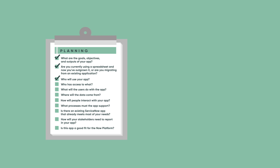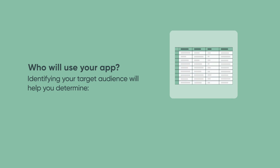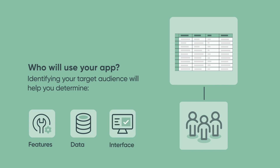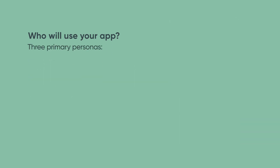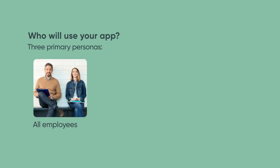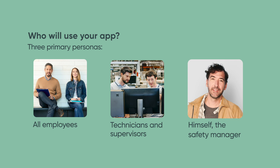Next question: who will use your app? Identifying your target audience will help you determine which features your app will provide, the data it will capture, and the interface you need to provide. Luke has three primary personas in mind for the safety app: all employees, who can report a safety issue; technicians and supervisors, who manage the active issues on a daily basis; and himself, the safety manager, who reviews the safety reports to take appropriate action.